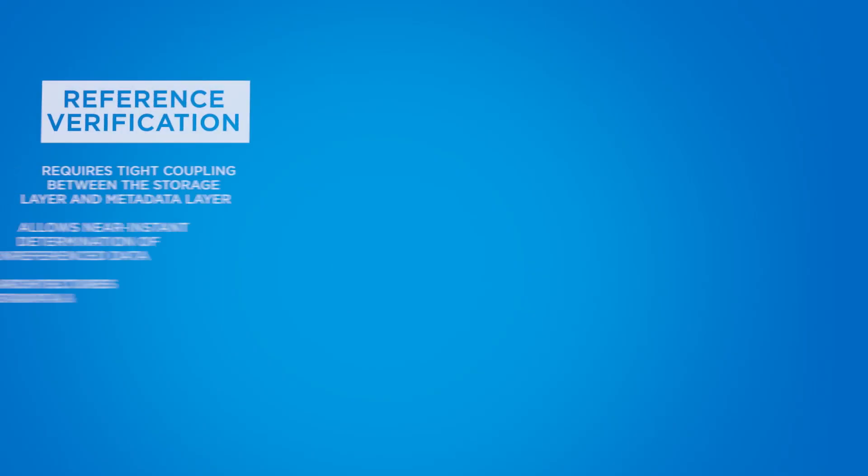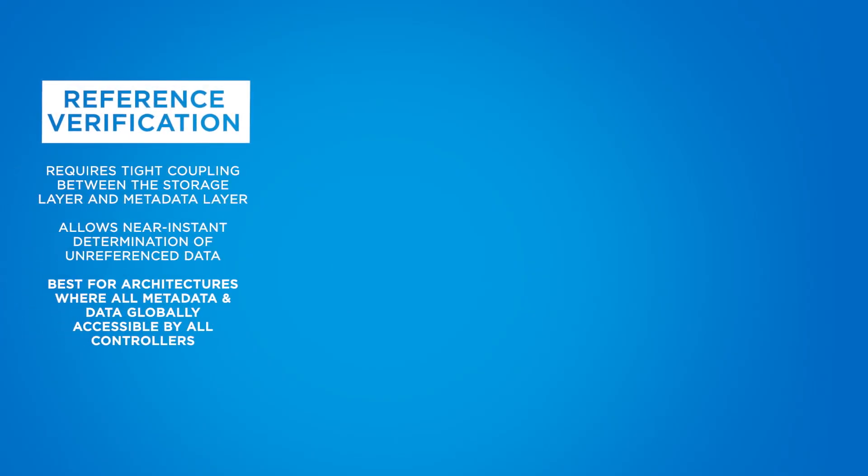In summary, this is one place where all three vendors chose a different solution to the problem. Reference verification requires a tight coupling between the storage layer and the metadata layer. On the upside, it allows for near-instant determination of unreferenced data, and where blocks can be deduped, the lookup to do that is fast and easy. This is best for architectures where all metadata and data are globally accessible by all controllers — Pure's dual controller architecture works perfectly for this.